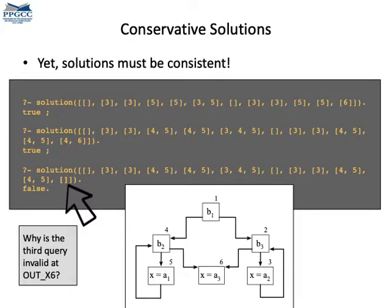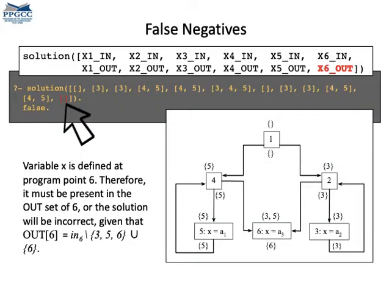However, notice that solutions must be consistent. If I remove the definitions from the outset of point 6, for instance, then I have a wrong solution and Prolog will give me false for an answer. In other words, the outset of point 6 must contain at least point 6 itself. This point is explicitly included in the outset by the equation that defines that outset. So, an empty set for out 6 will be wrong.